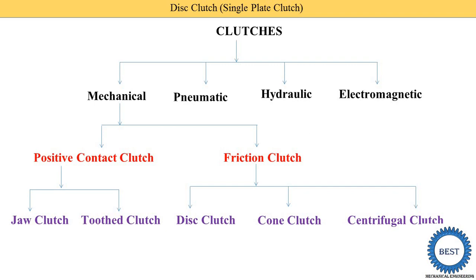Disc clutch is one type of mechanical clutch. In a mechanical clutch, there are two categories: one is positive contact clutch and second is friction clutch. In a friction clutch, there are three types: disc clutch, cone clutch, and centrifugal clutch. In this video, we are discussing the disc clutch.